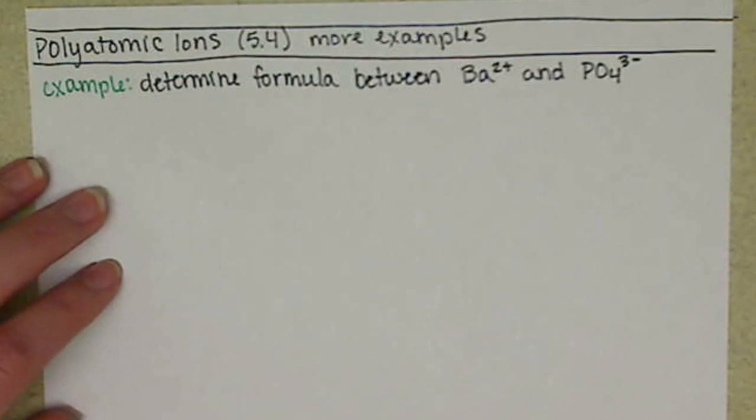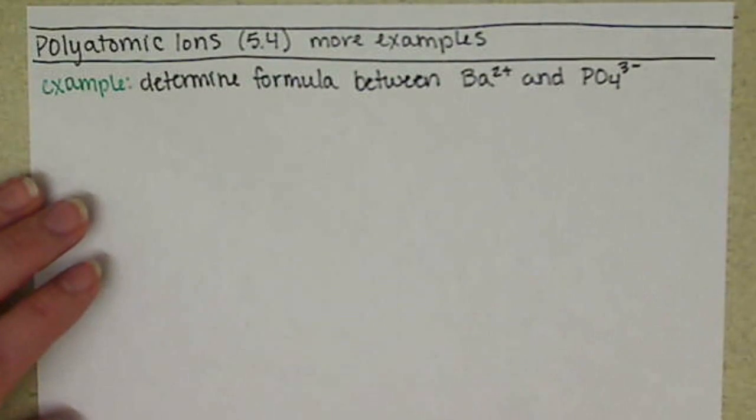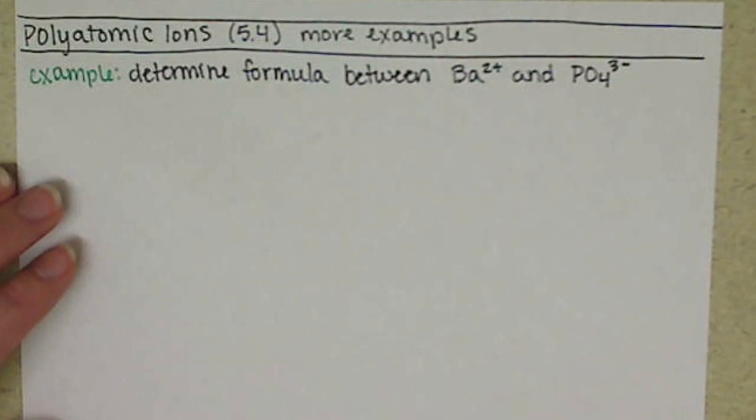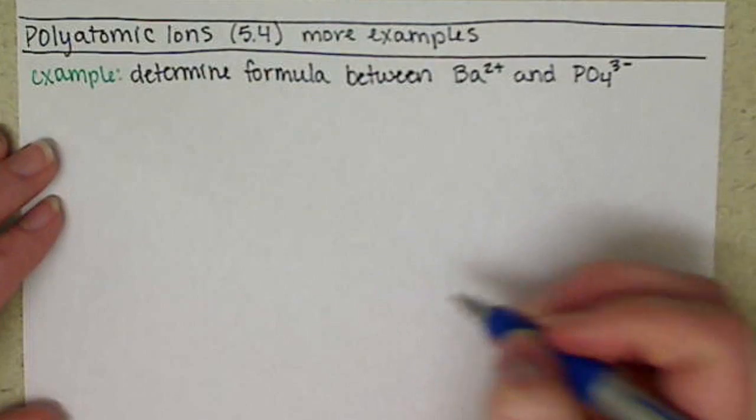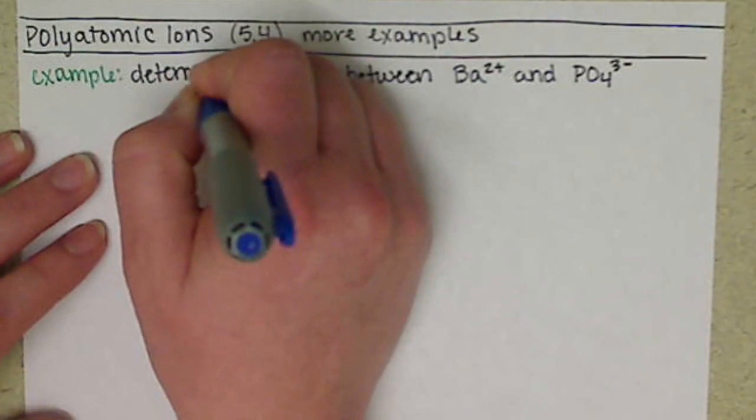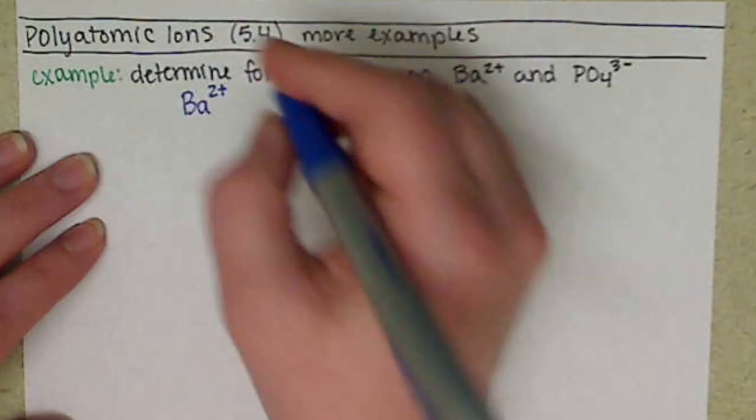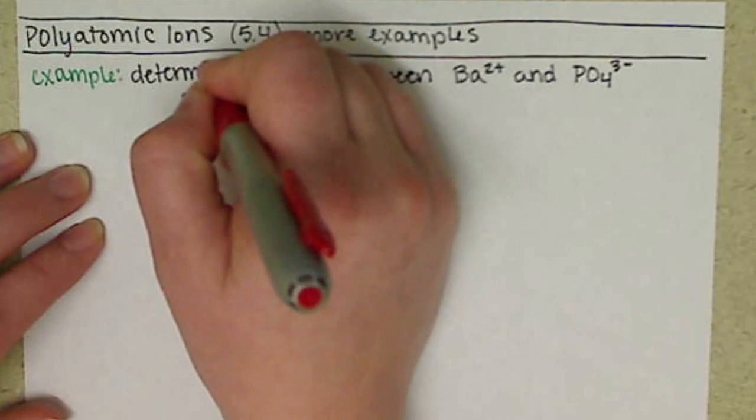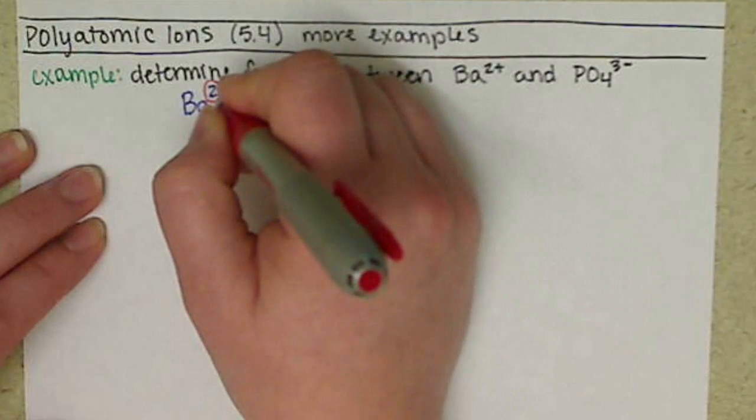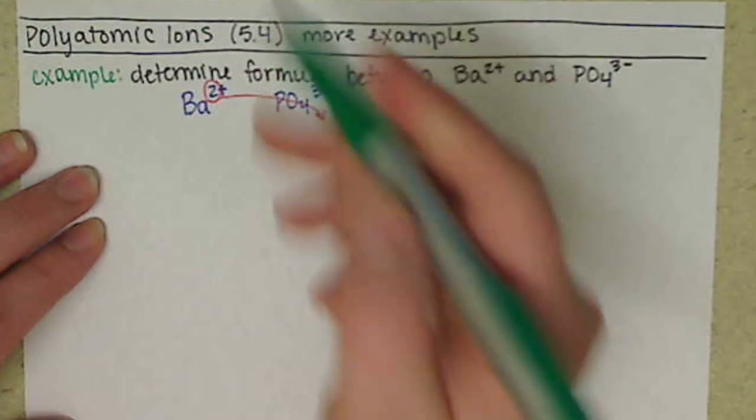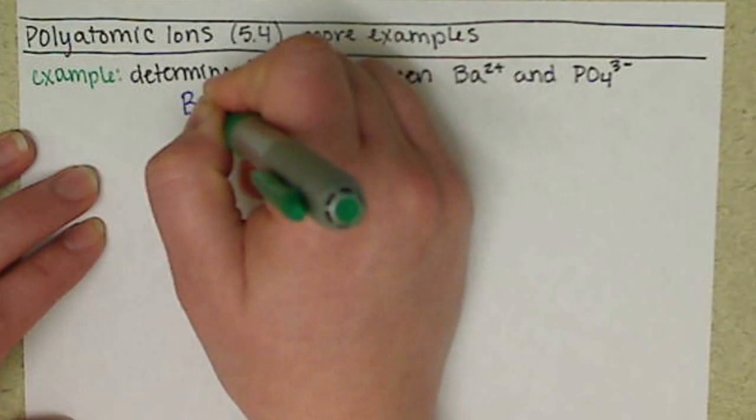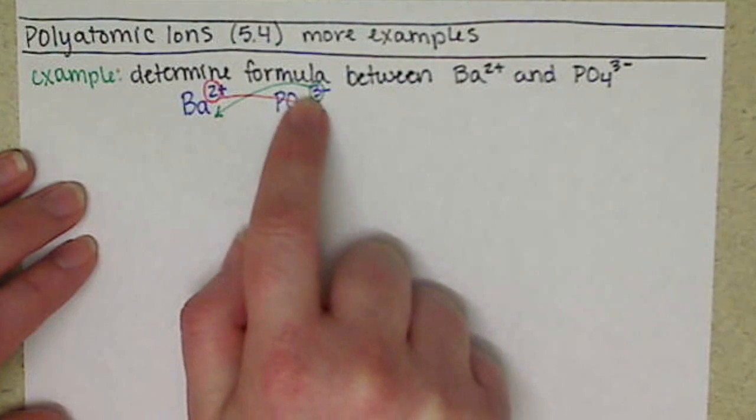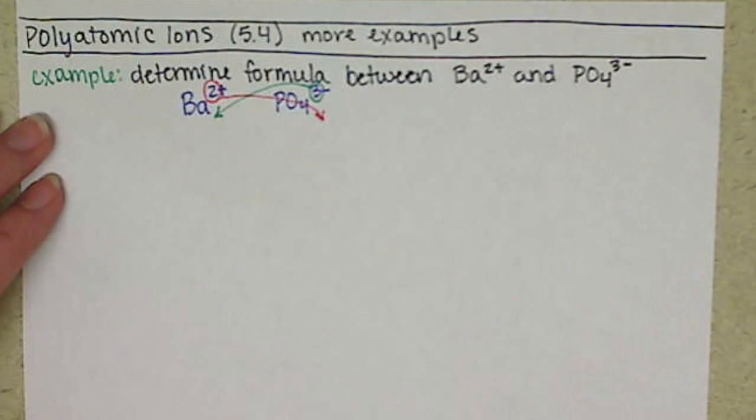What we're looking at here is we can still follow our cross charge that we've been talking about from section 5.2 and 5.3. We can still take our cation and our anion. We're going to take the numerical value from our cation that crosses over for our anion and same thing but opposite for anion. We always want to keep our polyatomics together.